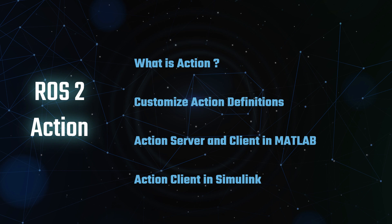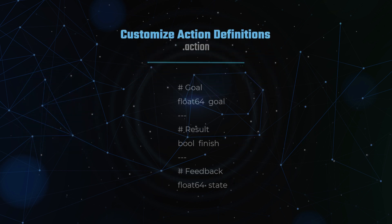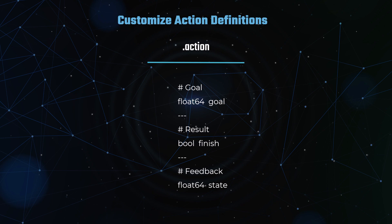Next, we will move on to customizing action definitions in MATLAB. In ROS2, an action message definition is specified in a .action file. This file defines the structure of messages used in the action communication process, and it is divided into three distinct sections: goal, result, and feedback.